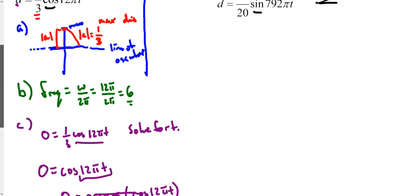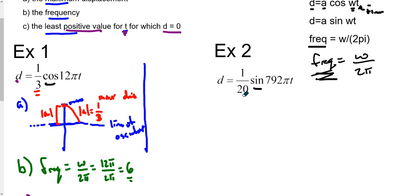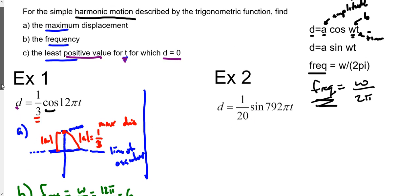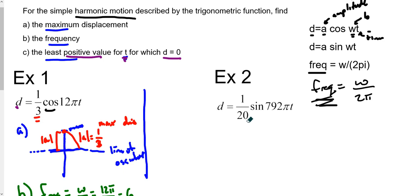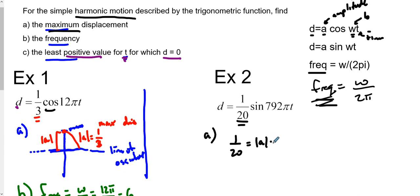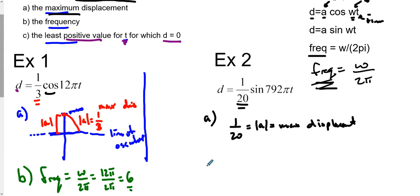Now you can try the next problem on your own — see if you can solve this harmonic motion problem. Press play when you're ready to find out the answer. For part A, we're finding the maximum displacement, which is the amplitude. In this case it's going to be 1/20, because that is the absolute value of A, and maximum displacement equals the amplitude of a harmonic motion sine graph.